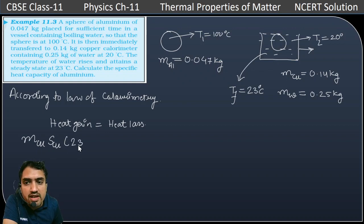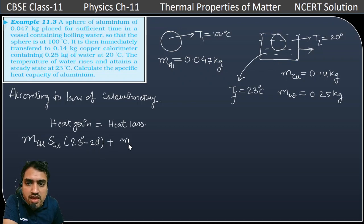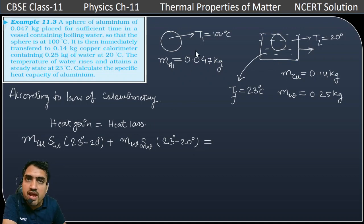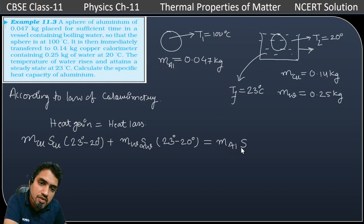The final temperature is 23 degree Celsius and the initial temperature is 20 degree Celsius. For water, we write mass of water × specific heat of water × (23 minus 20) degree Celsius. This is equal to the heat lost by the aluminum sphere: mass of aluminum × specific heat of aluminum × (100 minus 23) degree Celsius.